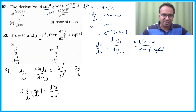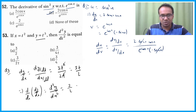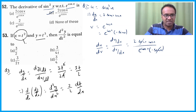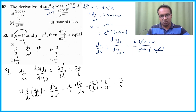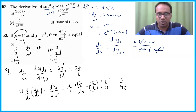Now differentiate dy/dx = 3t/2 again with respect to x to get d²y/dx². Remember, d²y/dx² is a notation — don't confuse it with d²x². When differentiating with respect to t and converting to x, we get (3/2) · (dt/dx). Since dx/dt = 2t, dt/dx = 1/(2t). Therefore d²y/dx² = (3/2) · (1/2t) = 3/(4t). Option D is correct.